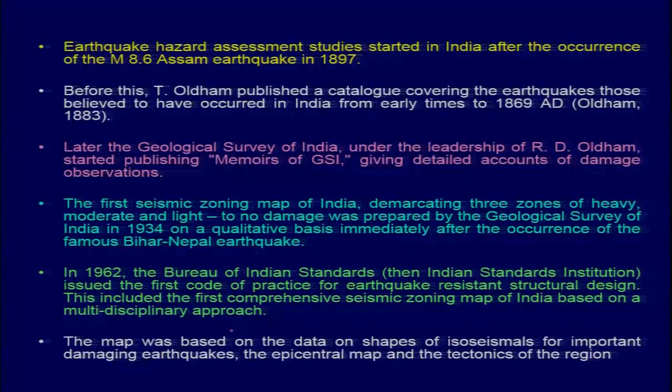Ground acceleration data is crucial — it tells us which area will have maximum intensity of ground shaking. This helps in protecting civil structures because earthquakes do not kill people directly; structures do. Protecting structures and building to proper building codes is extremely important so that those structures can sustain themselves at the time of peak ground acceleration.